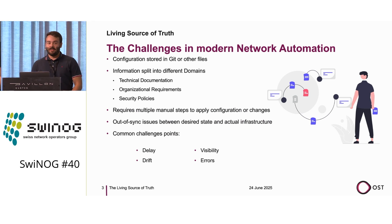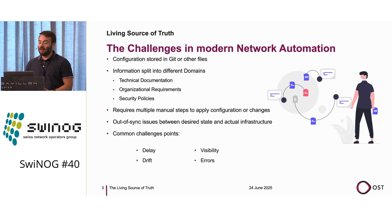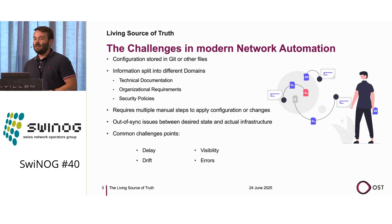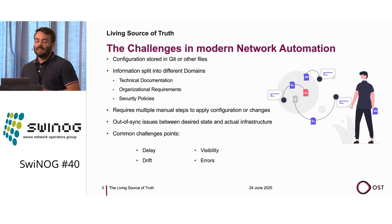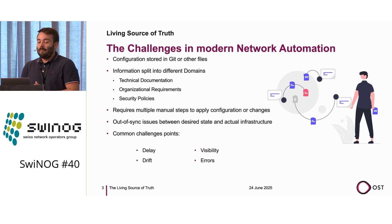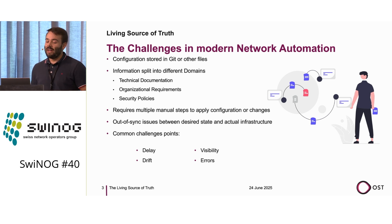Before we talk about the challenges of doing a demonstration live, let's talk about the challenges in modern network automation. Most of the challenges I see when I look at infrastructures: usually there are some configuration files we store in Git, we have other random files that we deploy onto our systems, we split all our information into different technical domains, we have the technical documentation which is usually not the same as the organizational requirements, and we have the security policy that changes from time to time but nobody is aware of that.